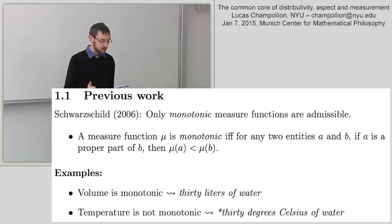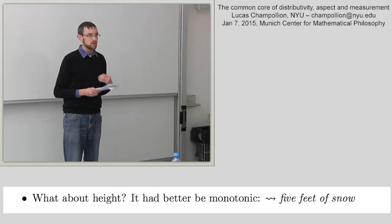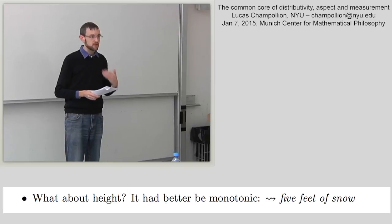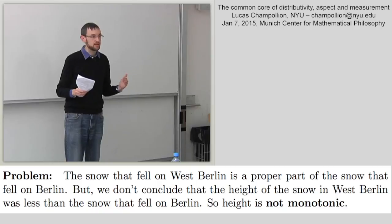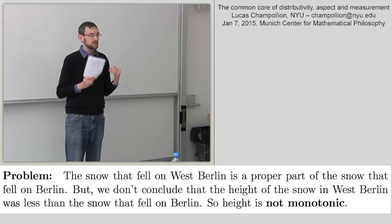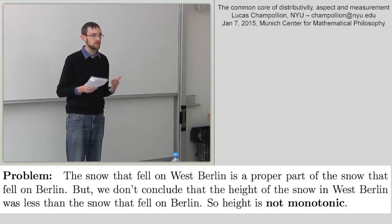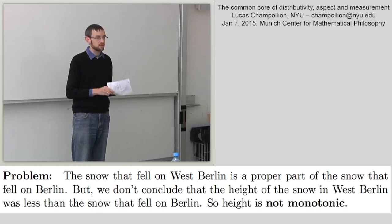Volume, weight, and spatial extent are monotonic. But speed is not monotonic — the first half of a driving event will not generally be slower than the entire event. Temperature is likewise non-monotonic: if water has a constant temperature throughout, any part has the same temperature as the whole. Schwarzschild says the admissible measure functions are exactly the monotonic ones. However, this leads to problems with cases involving more than one relevant dimension. For example, height is not monotonic: if five inches of snow fell on Berlin, we cannot conclude that less than five inches fell on West Berlin, even though that is a proper part.